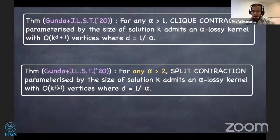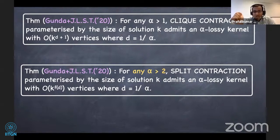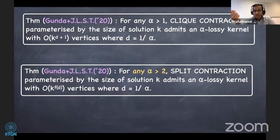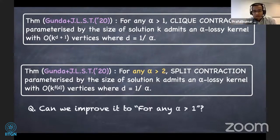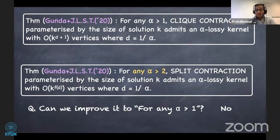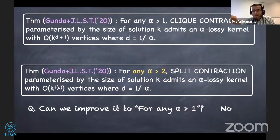Putting these things together: for any alpha strictly greater than one, clique contraction parameterized by the solution size k admits an alpha lossy kernel with O(k^d) vertices, where d is inversely proportional to alpha. This is as expected — the less margin of error you allow, the larger the kernel. In the same project we established this result for split contraction: for any alpha strictly greater than two, split contraction admits an alpha lossy kernel with O(k^{f(d)}) vertices, where f(d) is a quadratic function in d.